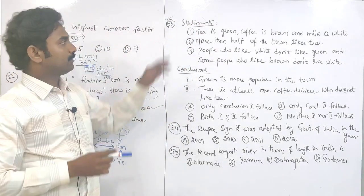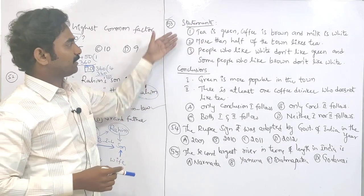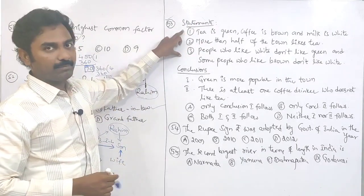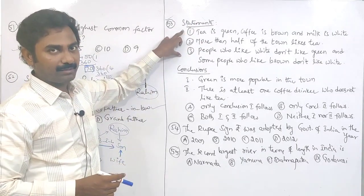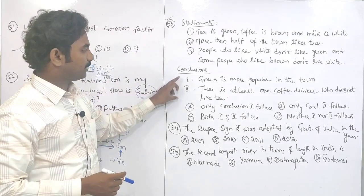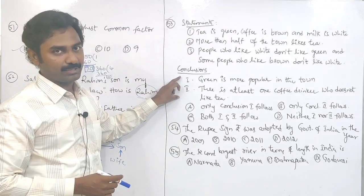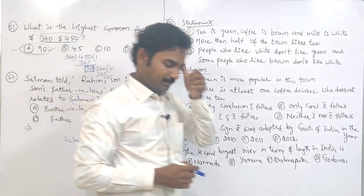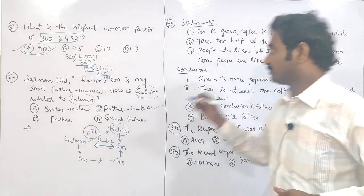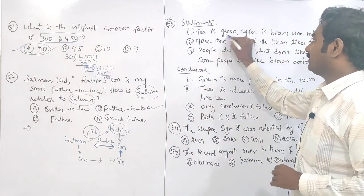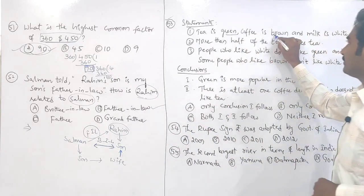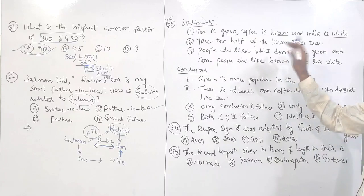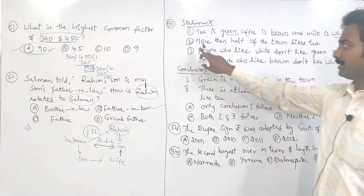Question number 53. Three statements are given. Keeping these statements in mind, we have to find which conclusion is correct. Tea is green color, coffee is brown color, and milk is white color — this is given in the first statement. Second statement: more than half of the town likes tea, meaning more than 50%.